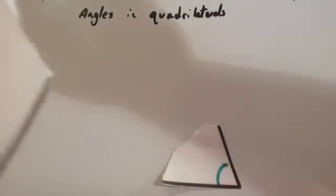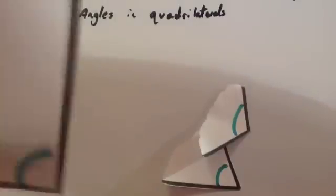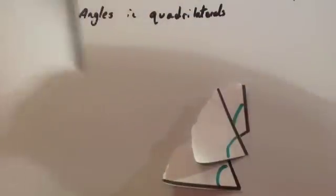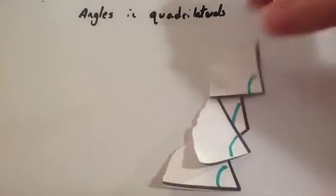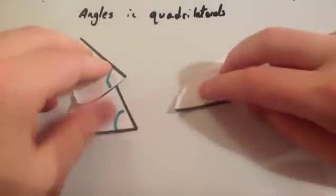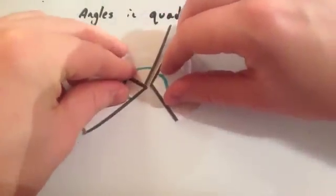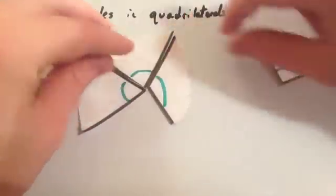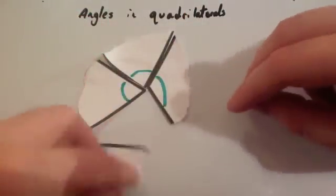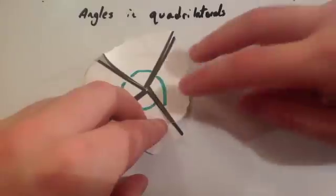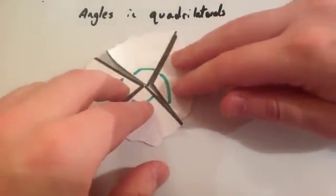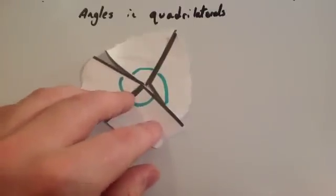I'm going to rip out the four angles — there's one, there's another one, there's another one, and there's another one. So we've got our four angles, and what I'm going to do is put them together. As you can see, the four angles meet at a point.